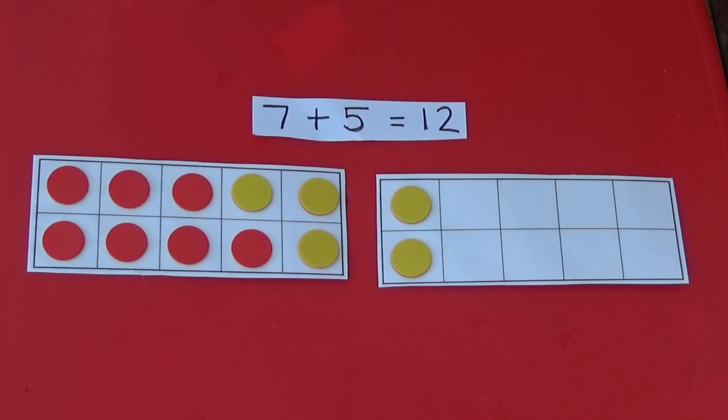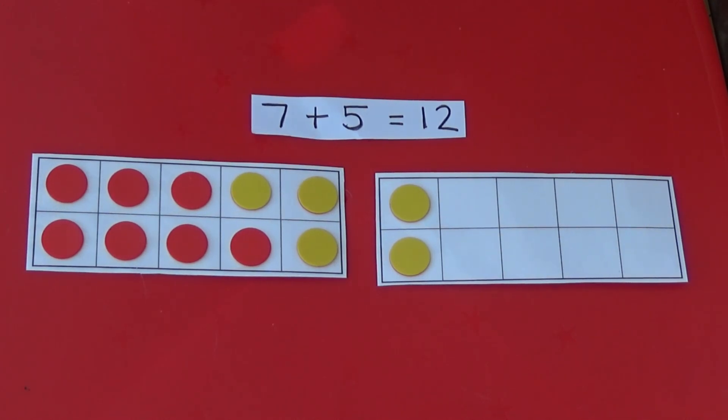Here I have put seven red counters in my first tens frame. I've then added five yellow counters by filling up the first tens frame and starting the second tens frame. We can quickly see that seven plus five is twelve.